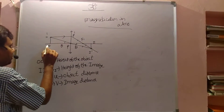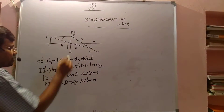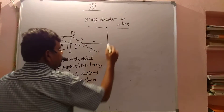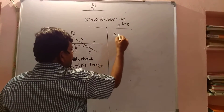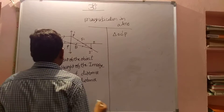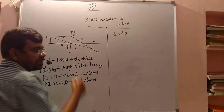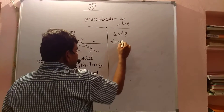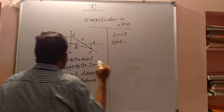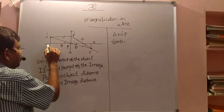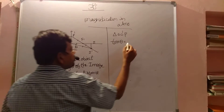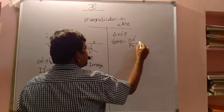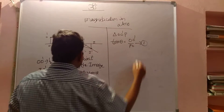Now I am taking triangle OO'B. In this triangle I am taking tan theta, which equals OO' divided by PO. This is my first equation.